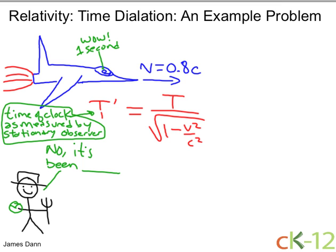This time, this is the time of the clock as measured in the spacecraft. So this is the time as measured by moving object.